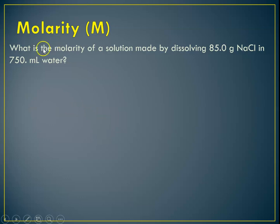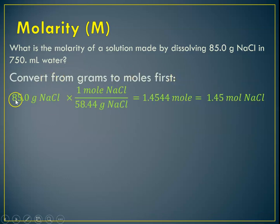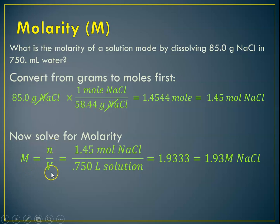So let's do a molarity problem. What is the molarity of a solution made by dissolving 85.0 grams of sodium chloride in 750 mLs of water? So the first thing we're going to have to do is we're going to have to convert from grams to moles. So 85 grams of sodium chloride times 1 mole of sodium chloride is 58.44 grams. Again, molar mass. So grams of sodium chloride cancels out. That leaves us with moles of sodium chloride, 3 sig figs, rounding to 3 sig figs. Now we can solve for our molarity. So molarity is N number of moles over V volume. Our number of moles we calculated here was 1.45. We have 750 mLs of water. So dividing by 1,000, that gives us 0.750 liters of solution. Do our division, and that gives us 1.9333, which rounds to 3 sig figs to 1.93 molar sodium chloride.